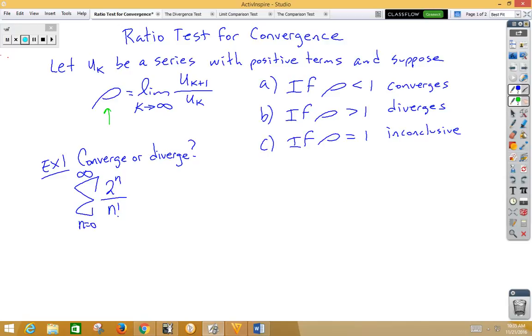is the limit as k approaches infinity of the next term over the preceding term. And if rho is less than 1, then the series will converge. If rho is greater than 1, the series will diverge. If rho is equal to 1, it's inconclusive, which of course is not very helpful to us.